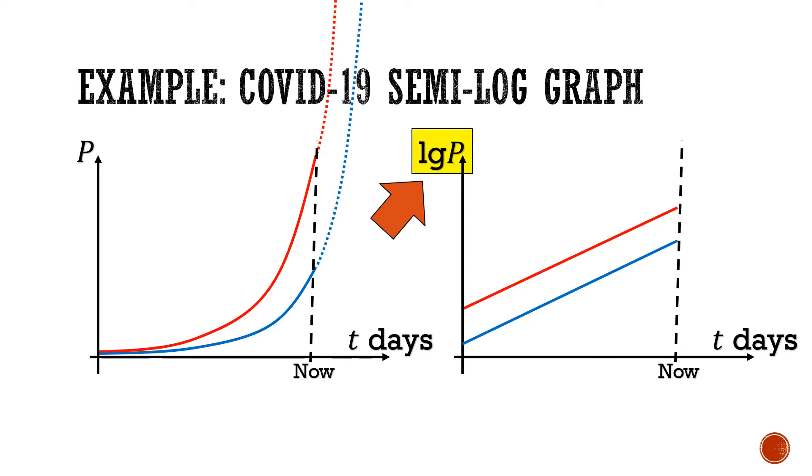Now, these two countries can be modeled as straight line graphs. The gradient here is proportional to the doubling rate, the time it takes for the number of patients to double, assuming that the rate of infection stays constant.